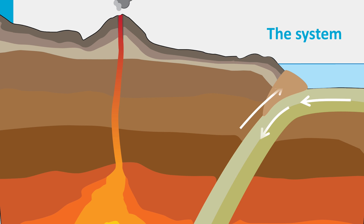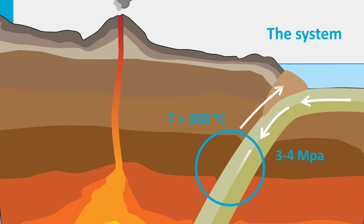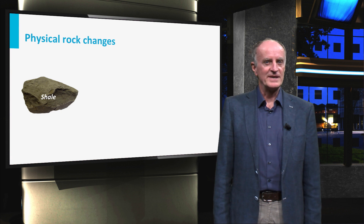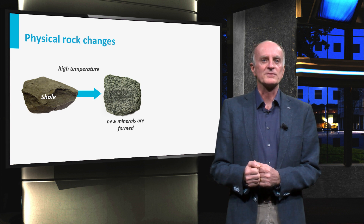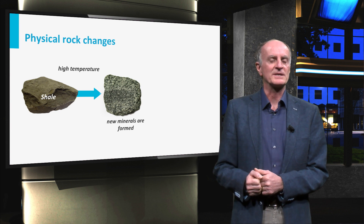When tectonic plates converge towards each other, a large region of deformation occurs, where rocks are squeezed and deformed typically at high temperatures. These temperatures can be of several hundred degrees, and pressures in excess of 3 or 4 MPa, which corresponds to the weight of a column of several kilometers of rocks. With higher temperatures, all minerals become unstable, and new ones will form, providing very different aspects of the rock.